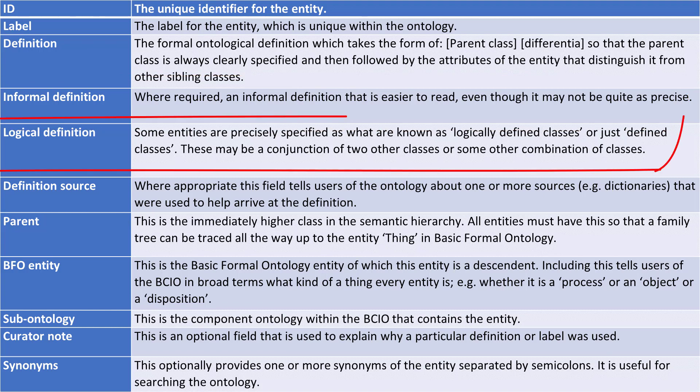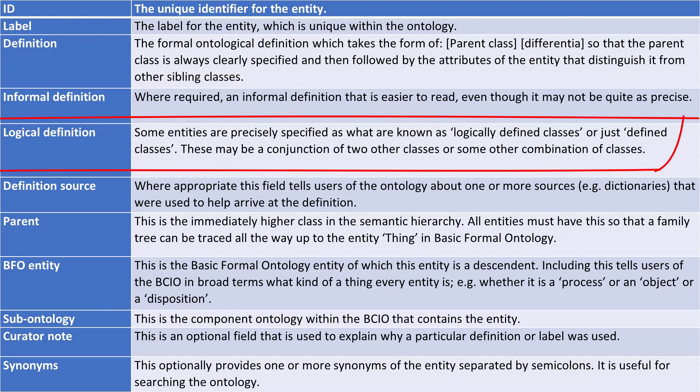And then in some cases, we'll have a logical definition. Some entities within the ontology are what's known as logically defined classes, or sometimes just referred to as defined classes. These are entities which, strictly speaking, don't need a definition in the definition field, although we do provide them, because in fact they are logically defined — often, for example, as the conjunction of two other classes, or some concatenation of other classes.